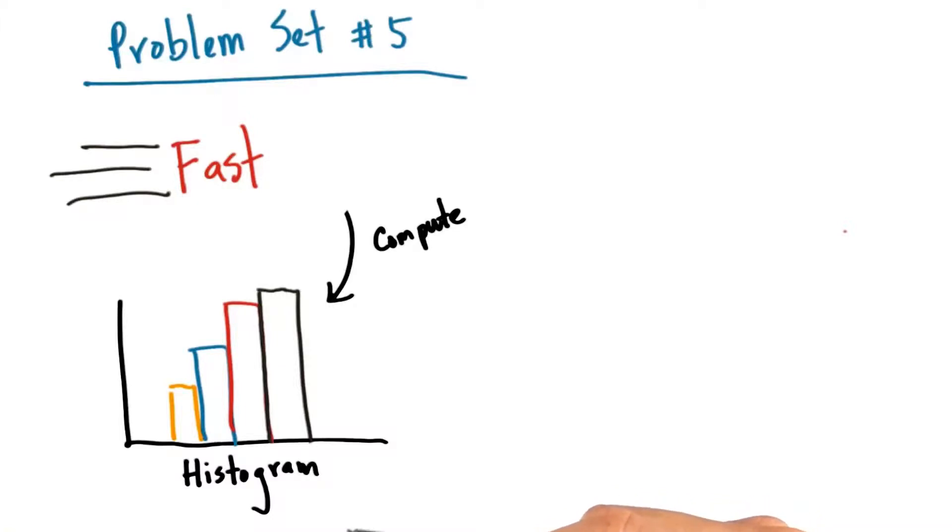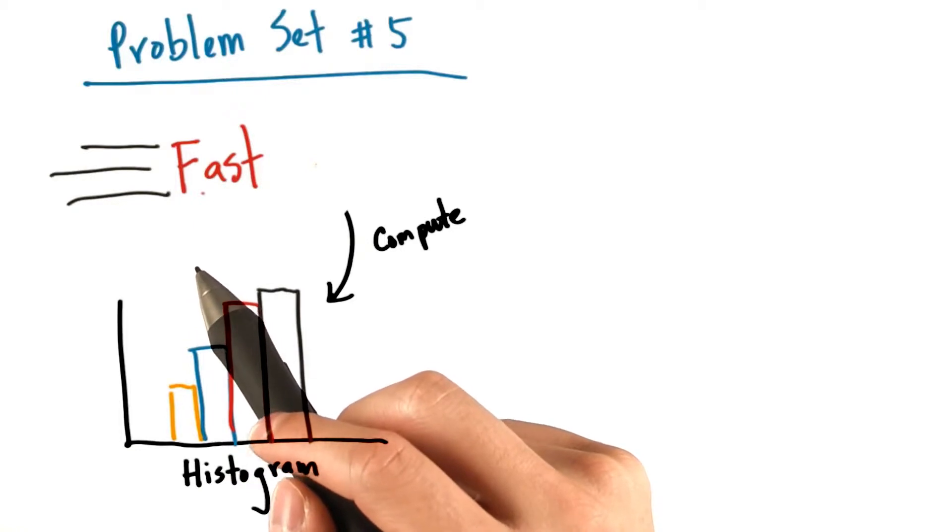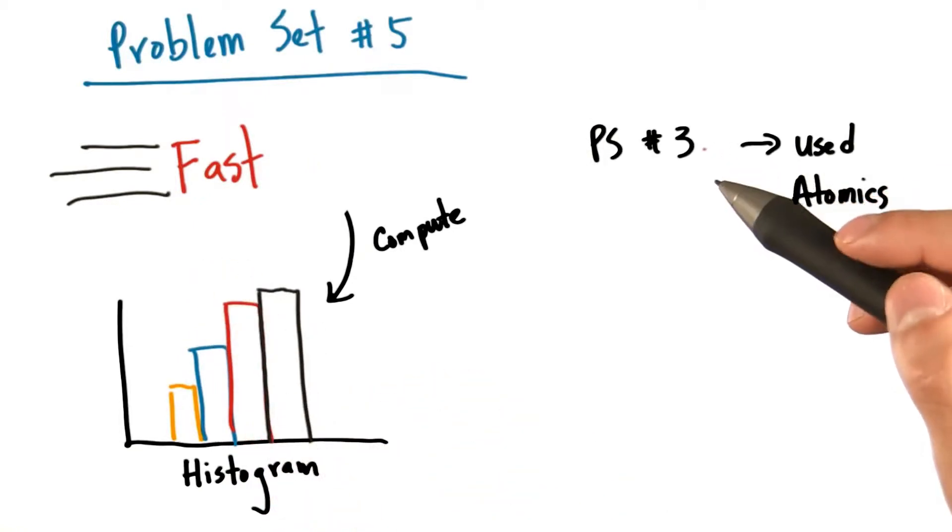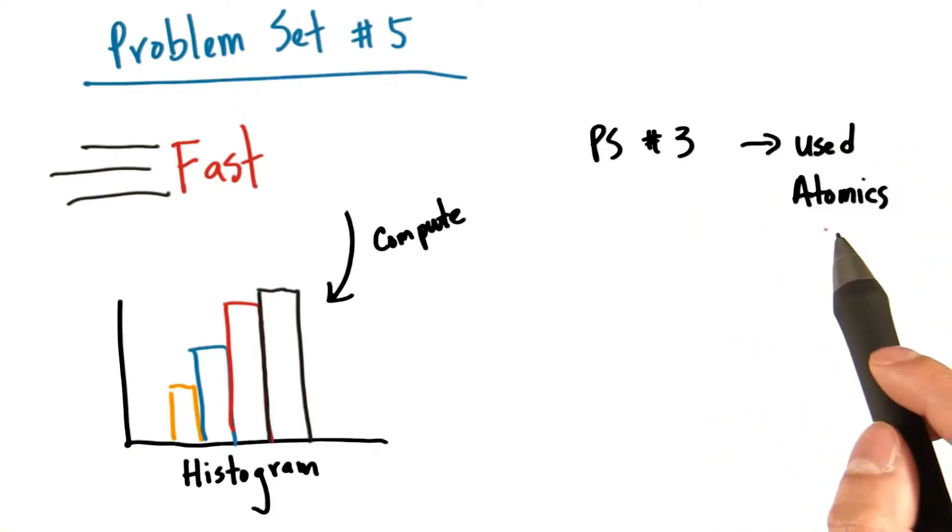In problem set number 5, you will be designing and implementing a fast parallel algorithm to compute histograms. You already implemented a kernel for computing histograms in problem set number 3 that used atomic operations.